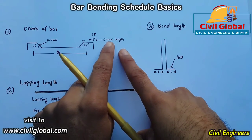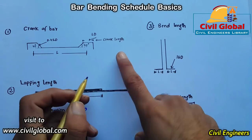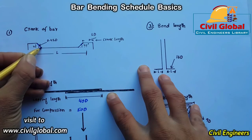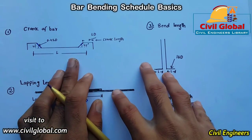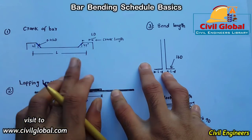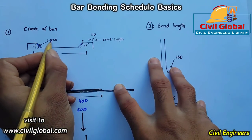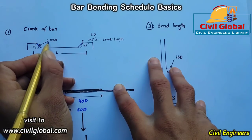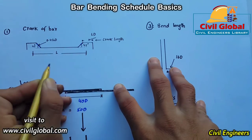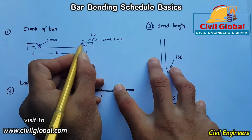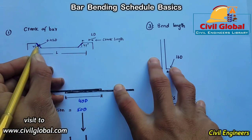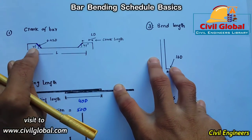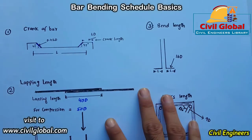You can also use the formula 0.42D to get the crank length, where D is the diameter of the steel and 0.42 is a constant value. Keep in mind that when using this kind of bend in a beam, you must keep the angle at 45 degrees on both sides. This is the first basic of bar bending schedule.